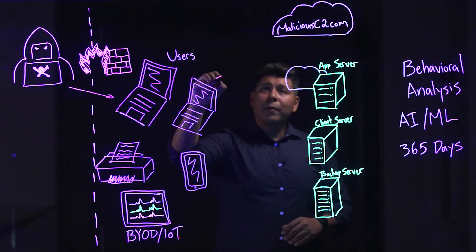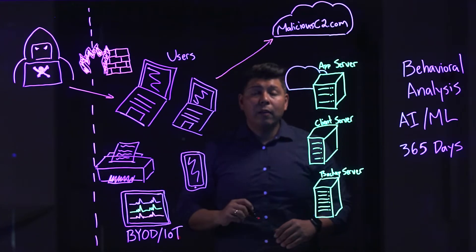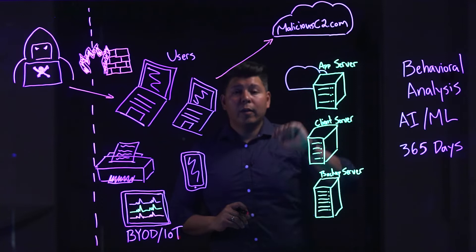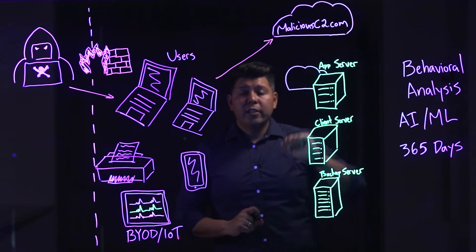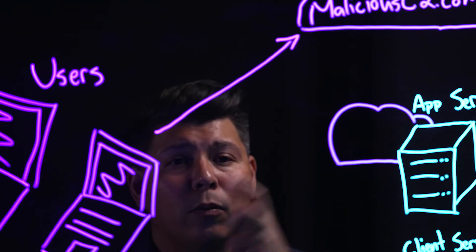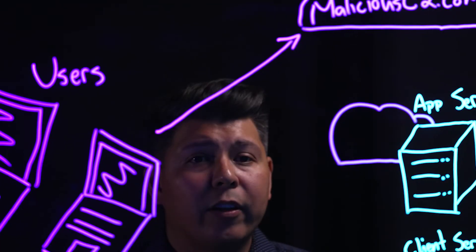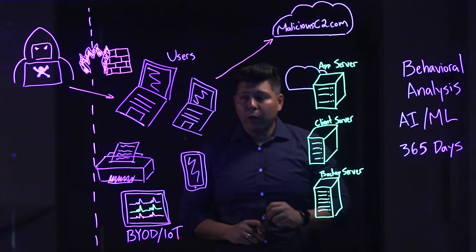First, they're trying to maintain persistence. So maybe they're going and communicating with a known or unknown C2 server — a command and control server. They're downloading the tools that are going to enable their operation.